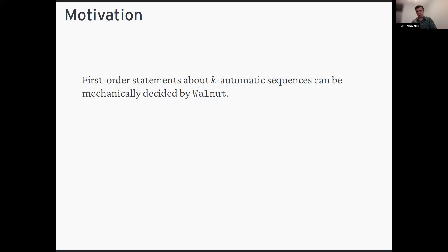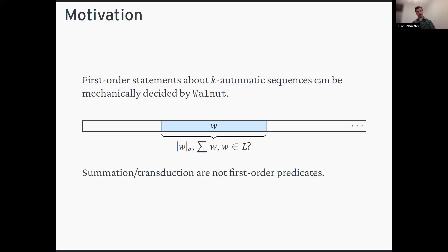One of the problems with Walnut is that it's limited to first-order logic, so there are certain things that are difficult to state in that kind of language. For example, if you have a factor w of an automatic sequence, you might want to look at the number of occurrences of some symbol in w, or talk about the sum of all the symbols in w.